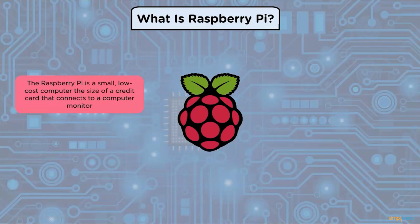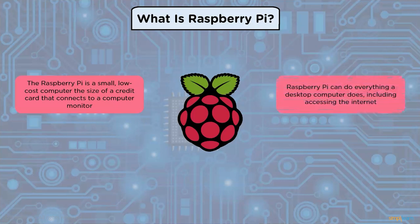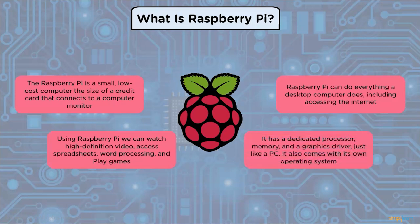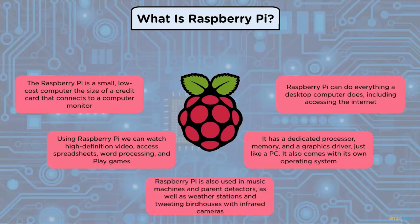Raspberry Pi is a small, low-cost computer the size of a credit card that connects to a computer monitor or television and utilizes a conventional keyboard and mouse. Raspberry Pi can do everything a desktop computer does, including accessing the internet, watching high-definition videos, using spreadsheets, word processing, and playing games. It has a dedicated processor, memory, and a graphics driver, just like a PC, and comes with its own operating system — Raspberry Pi OS, which is a modified version of Linux. Raspberry Pi is also used in music machines, parent detectors, weather stations, and tweeting birdhouses with infrared cameras.